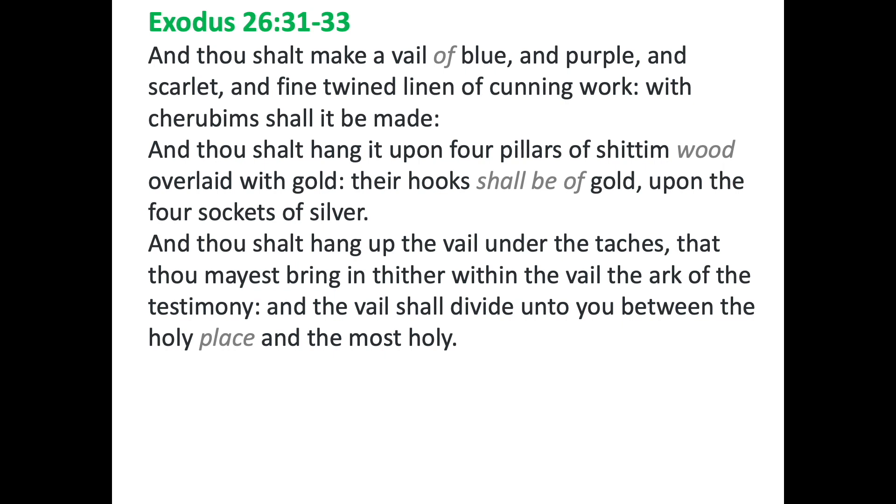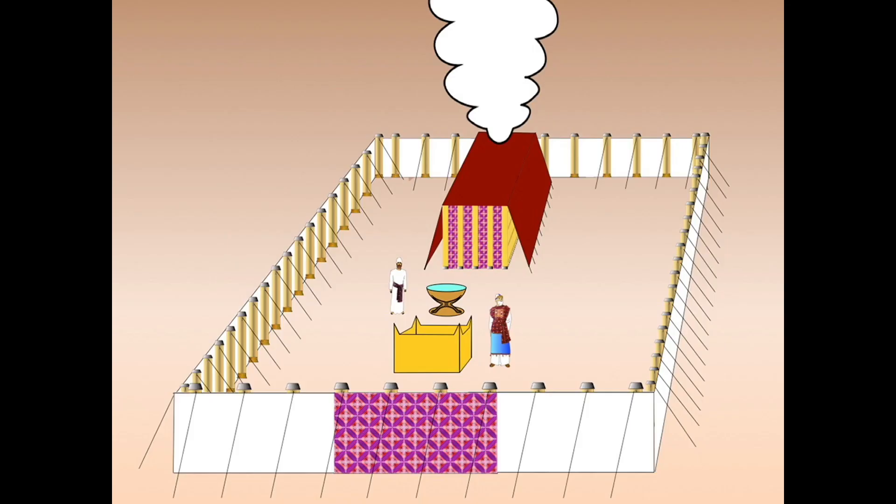God is pleased to bless to us the reading of his most precious word. Here then is our artist's impression of what the tabernacle might have looked like from the outside. Today we're going to go right within that holy place, between the holy place and the most holy place to see the pillars that held up the veil, their silver sockets, and also consider the silver sockets used to hold up the boards round about the holy place and the most holy place.